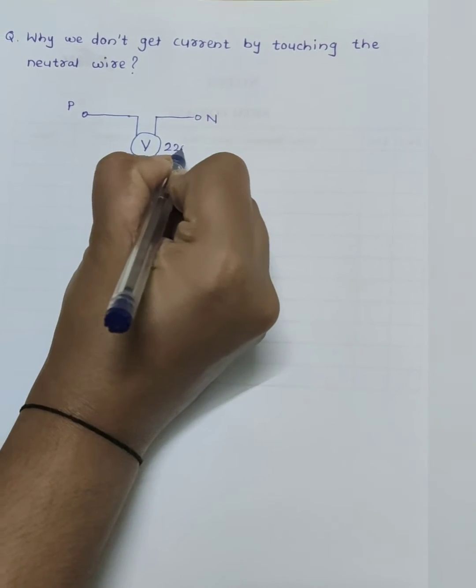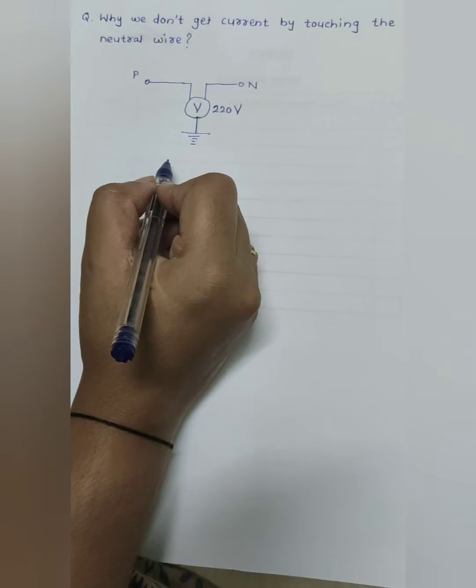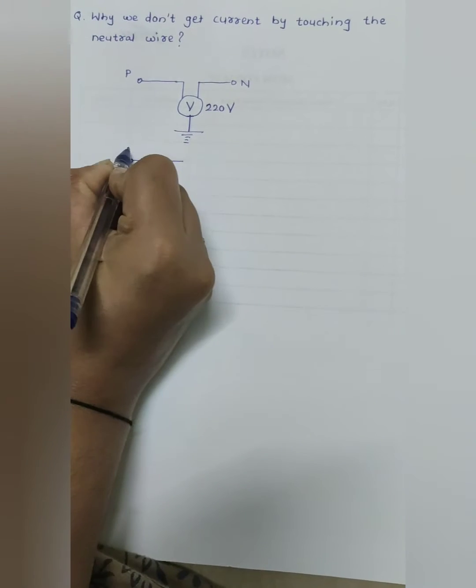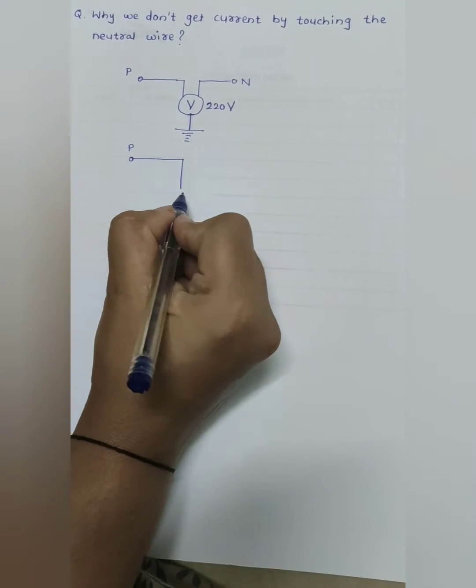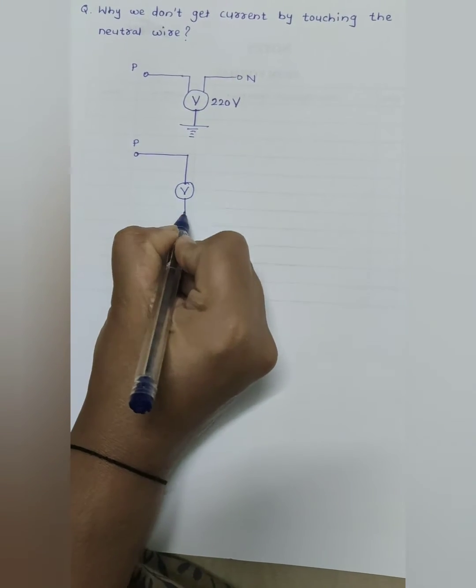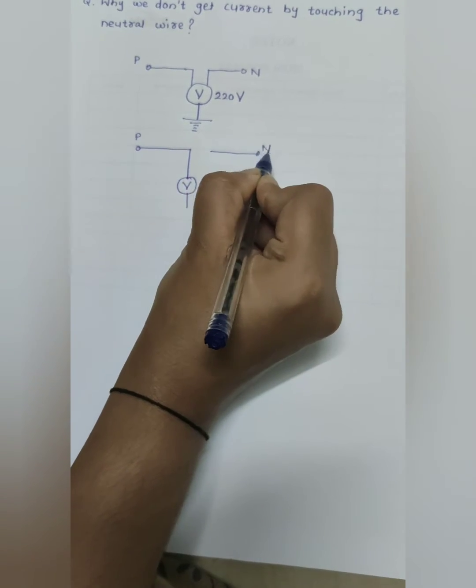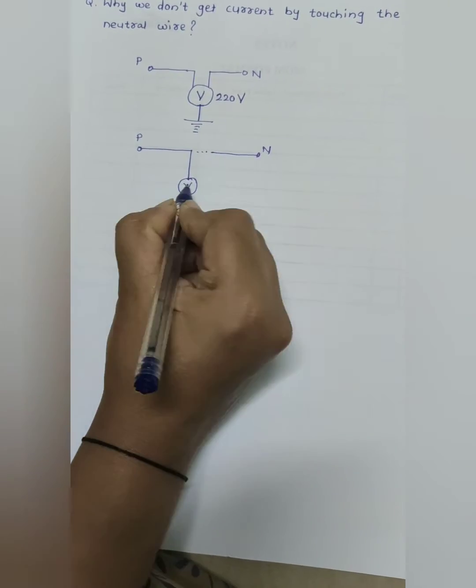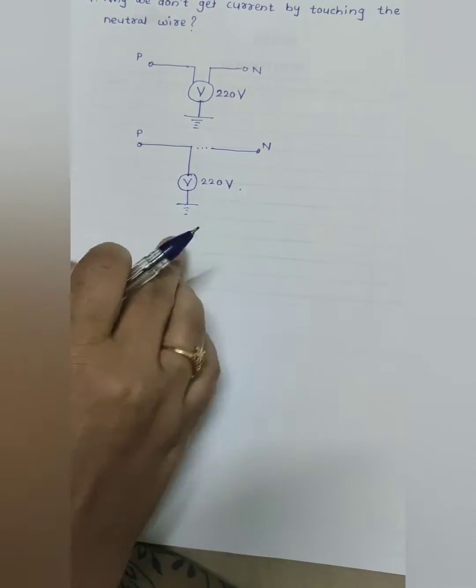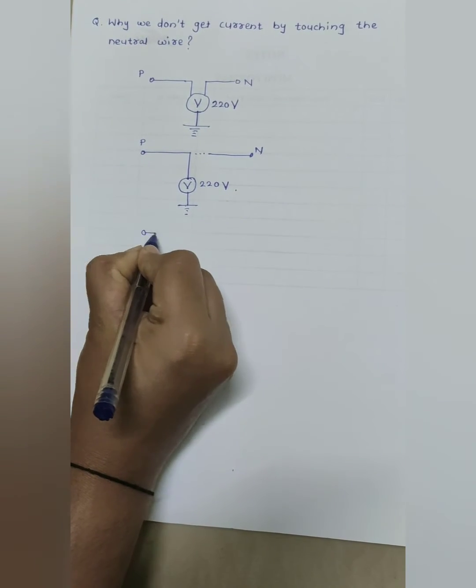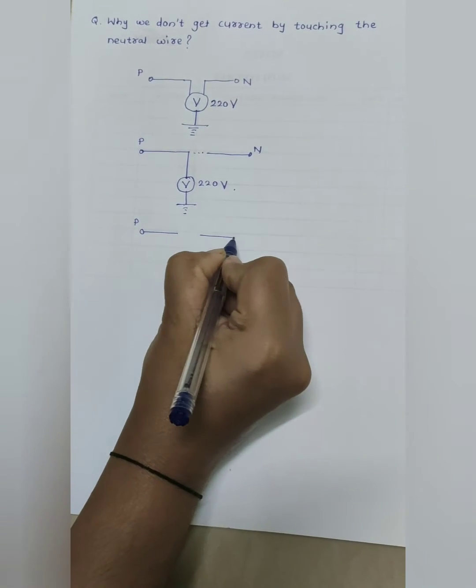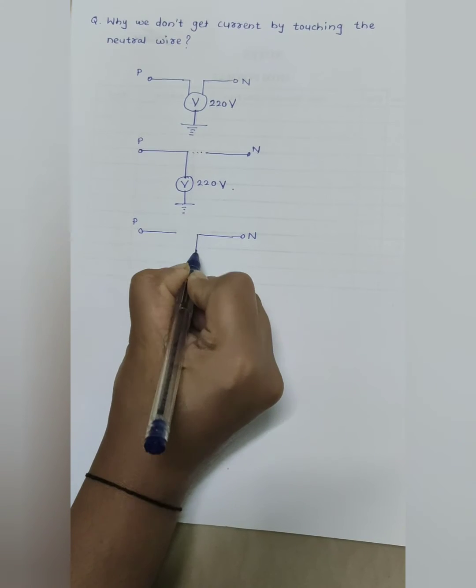Suppose I connect a voltmeter to phase wire only, then this will also show 220 volt reading. But if I connect this voltmeter to the neutral wire, then voltmeter shows 1 to 2 volt reading. We all know that voltage of neutral wire is zero, but there is some voltage exist between two points. This voltage is negligible, about 1 to 2 volt.